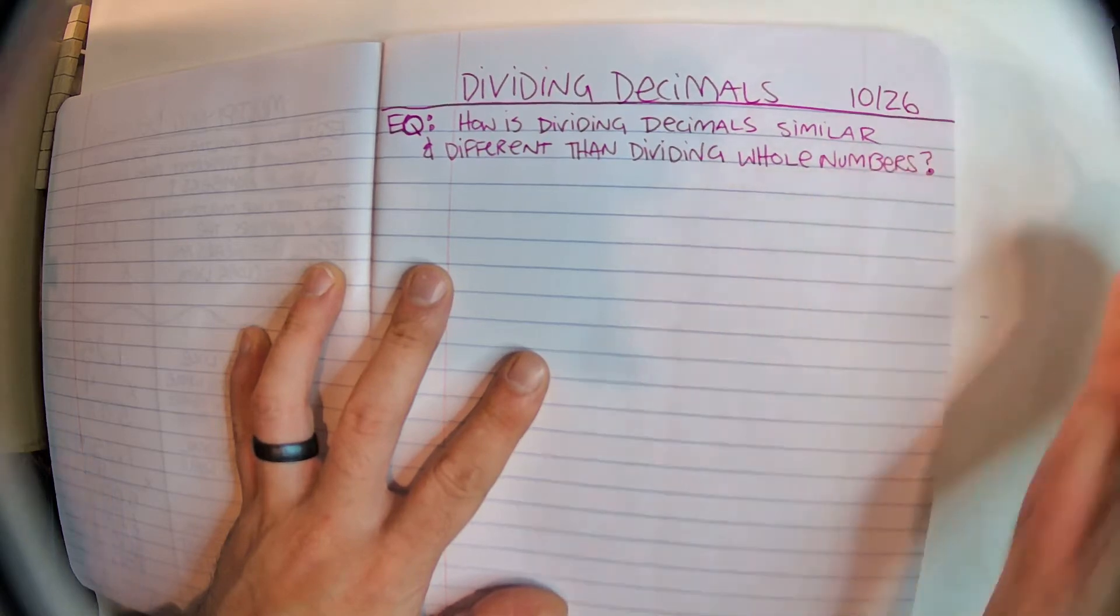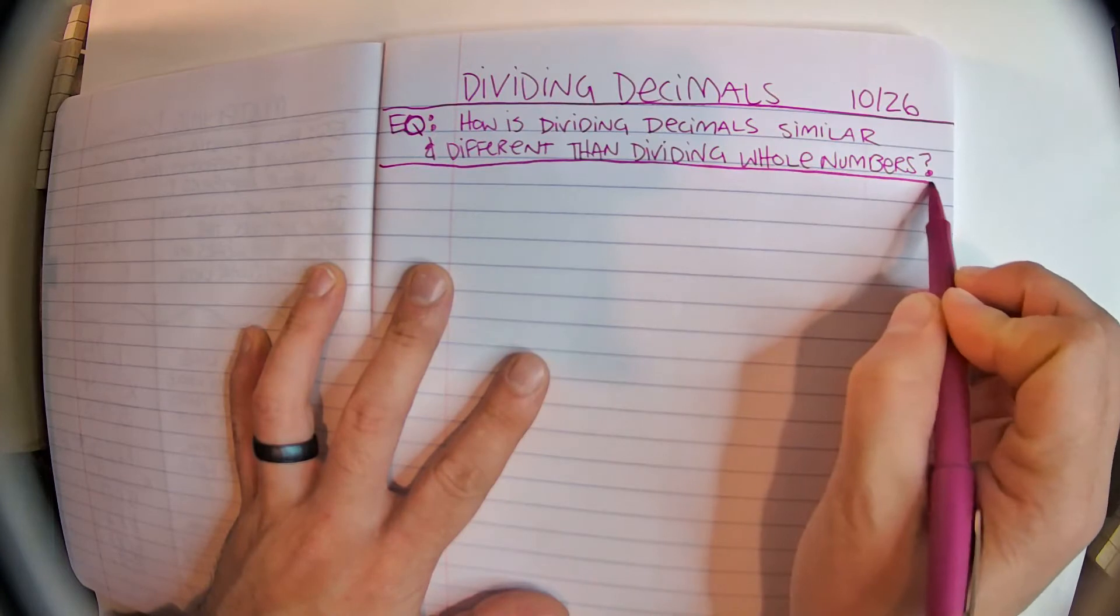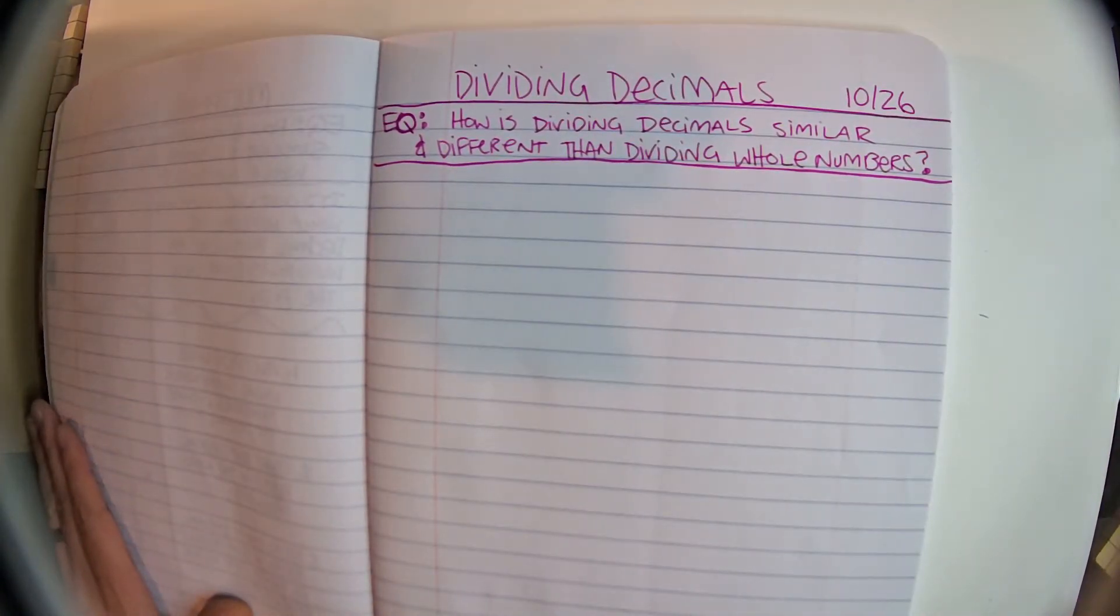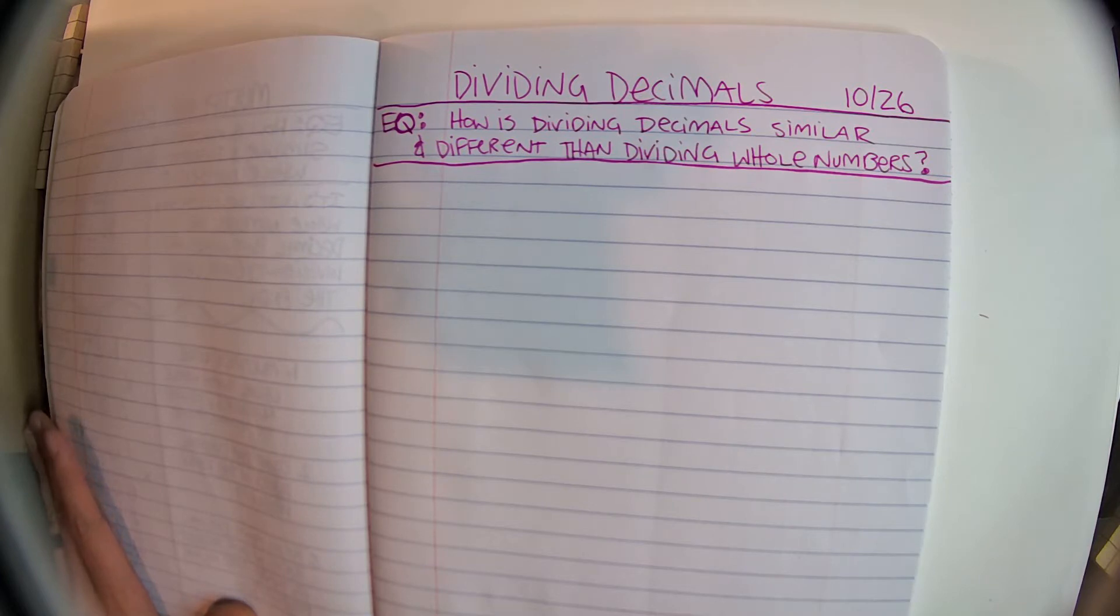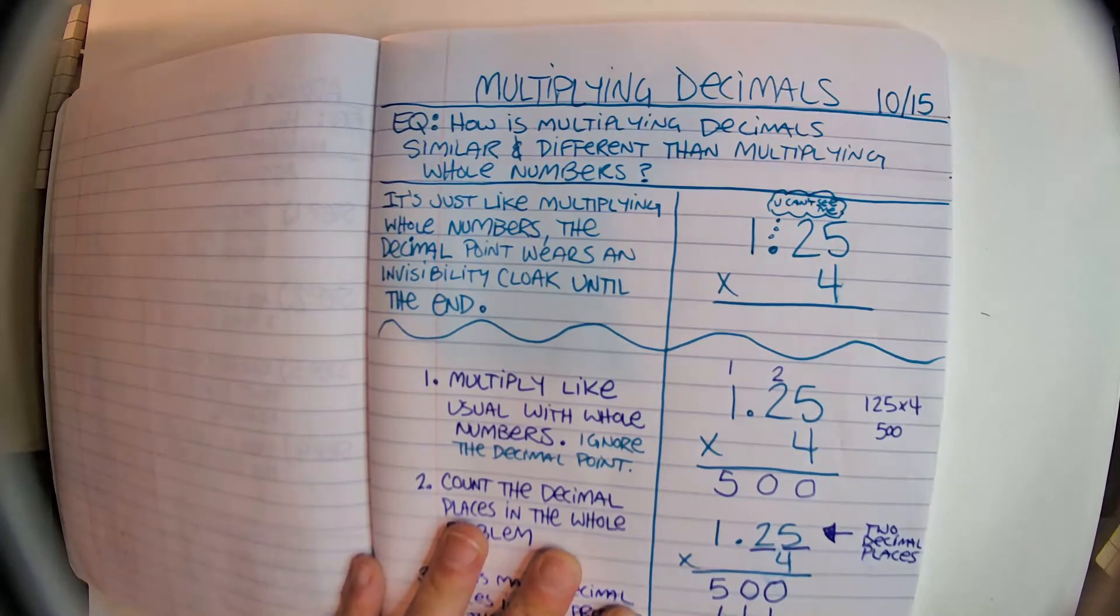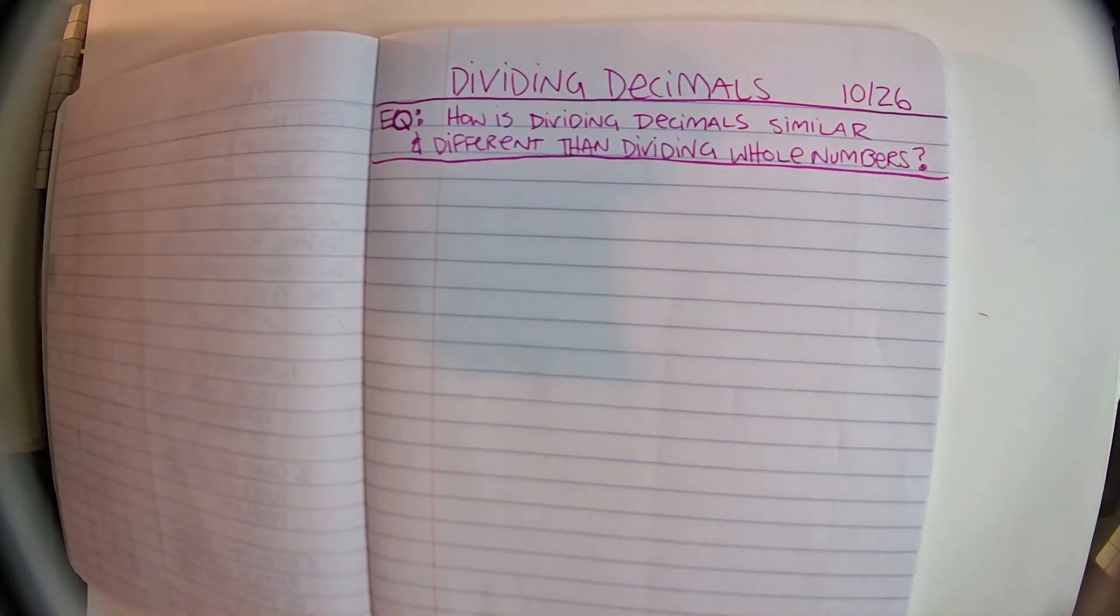And I learned from my mistake last time that I could fit more into my essential question if I put more words in the first line. Because if you look at our essential question, it's basically the same thing as the last essential question. How is multiplying decimals similar and different from multiplying whole numbers? Well, look at our essential question today. How is dividing decimals similar and different than dividing whole numbers?